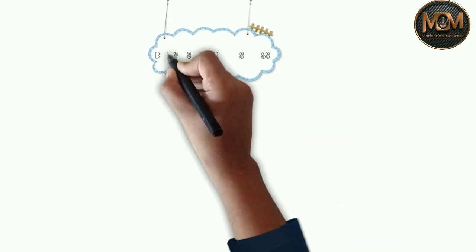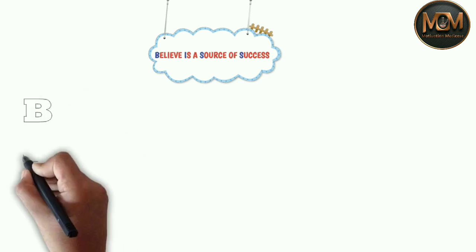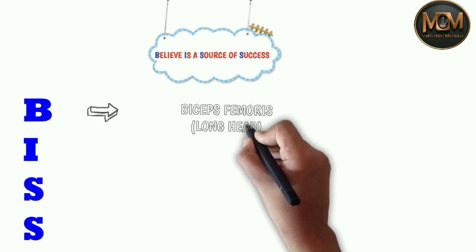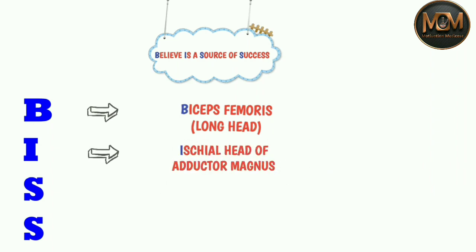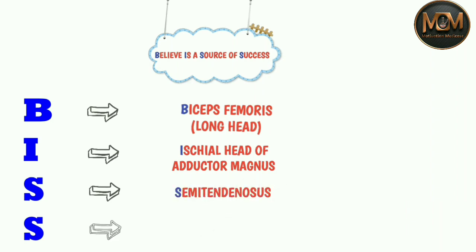Take B from 'belief', I from 'is', S from 'source', and the last S from 'success'. From B, we have the biceps femoris. From I, we have the ischial head of adductor magnus. From the first S, we have the semitendinosus muscle, and from the last S, the semimembranosus muscle.